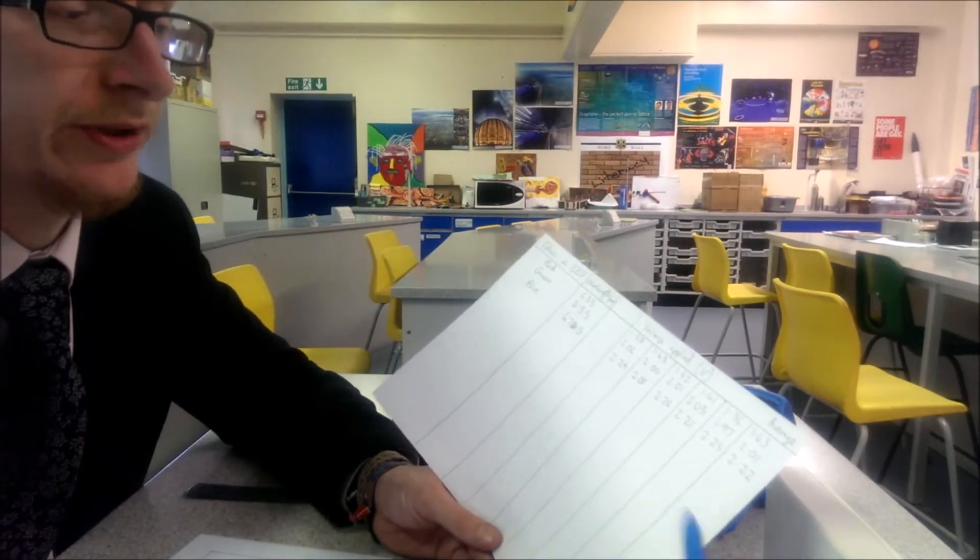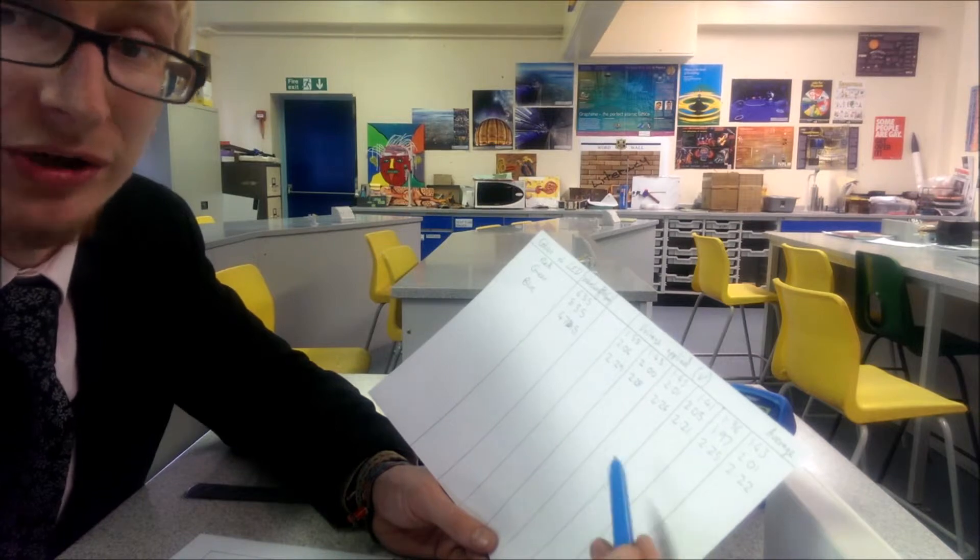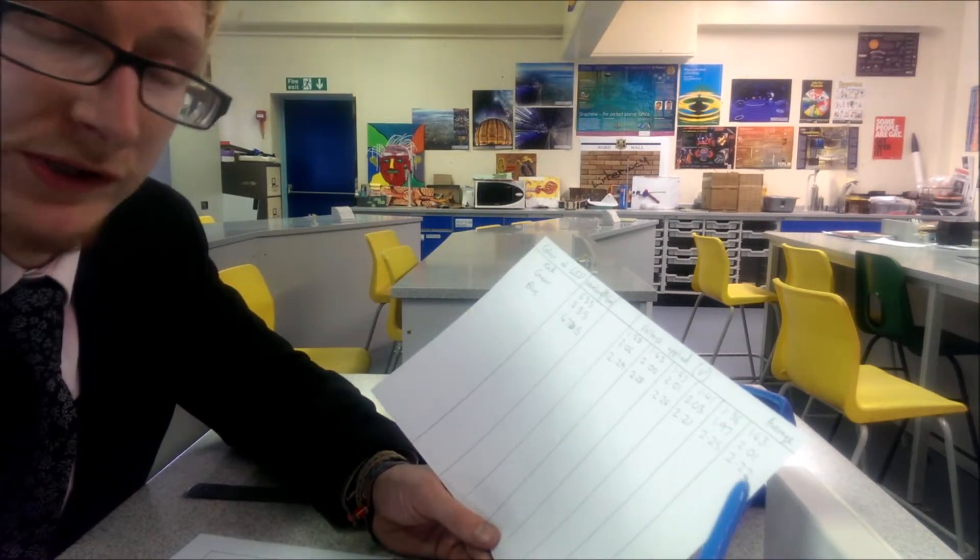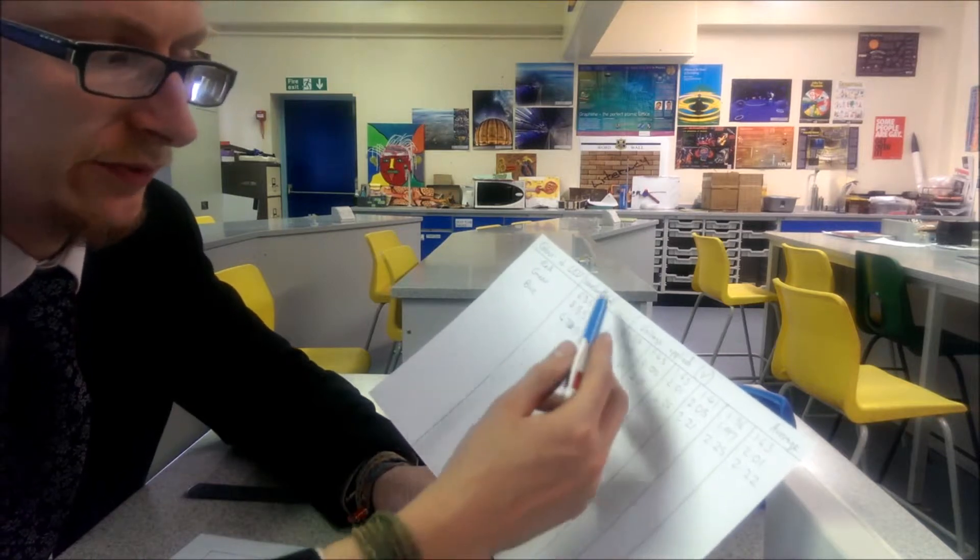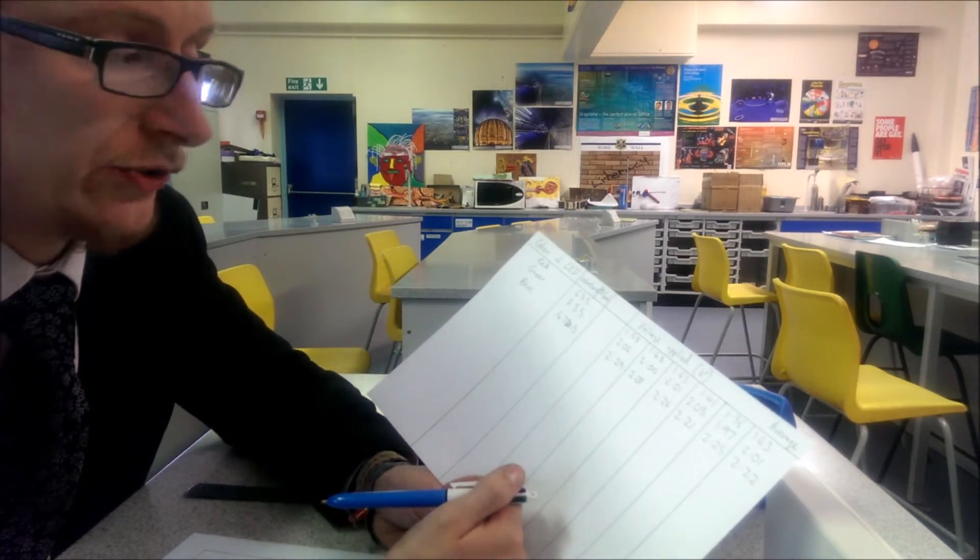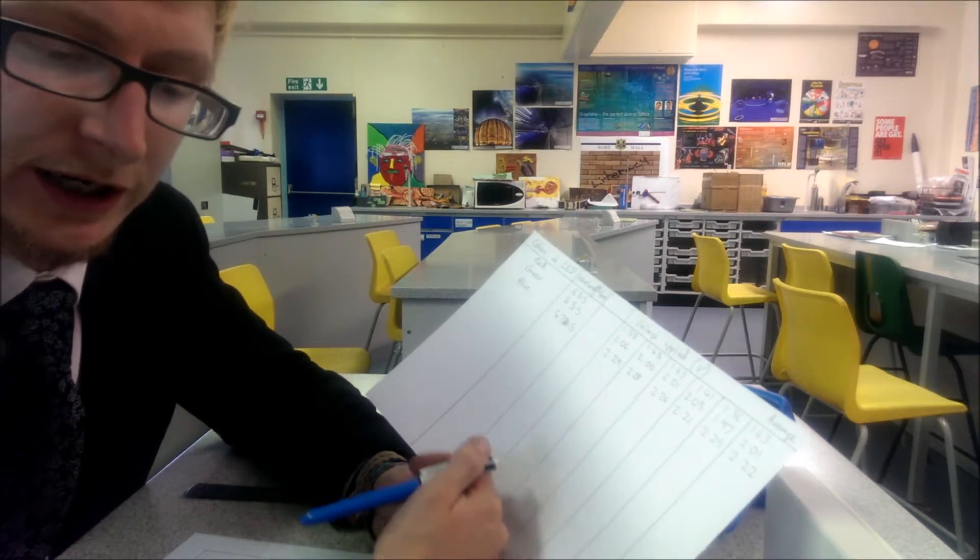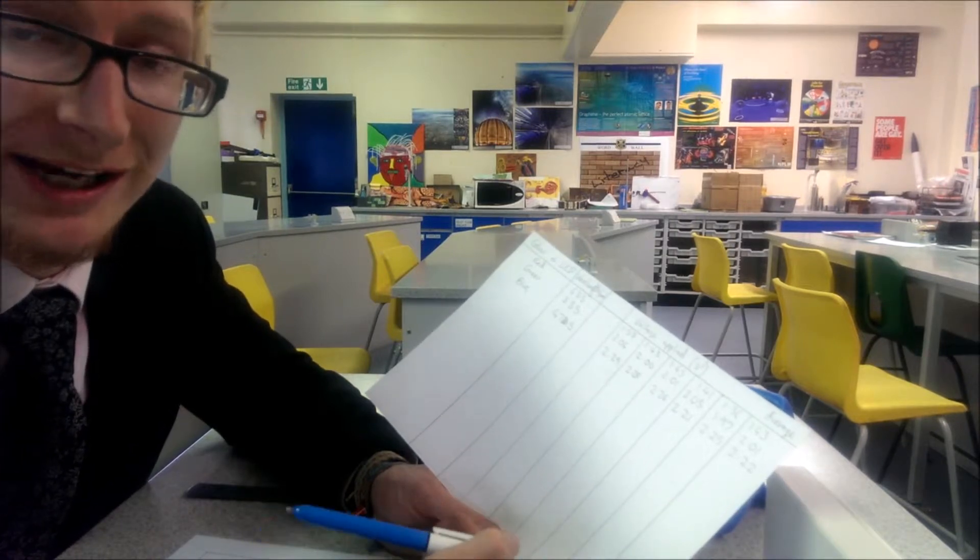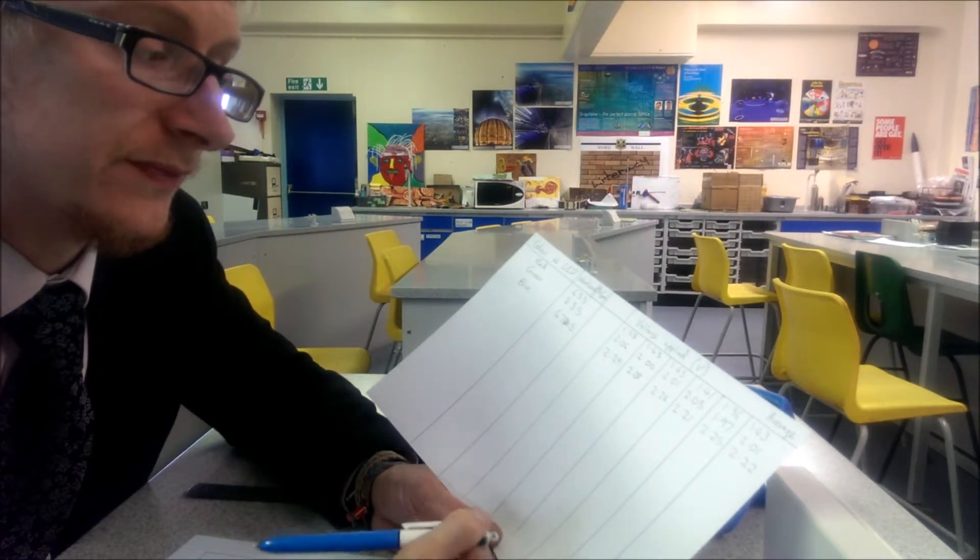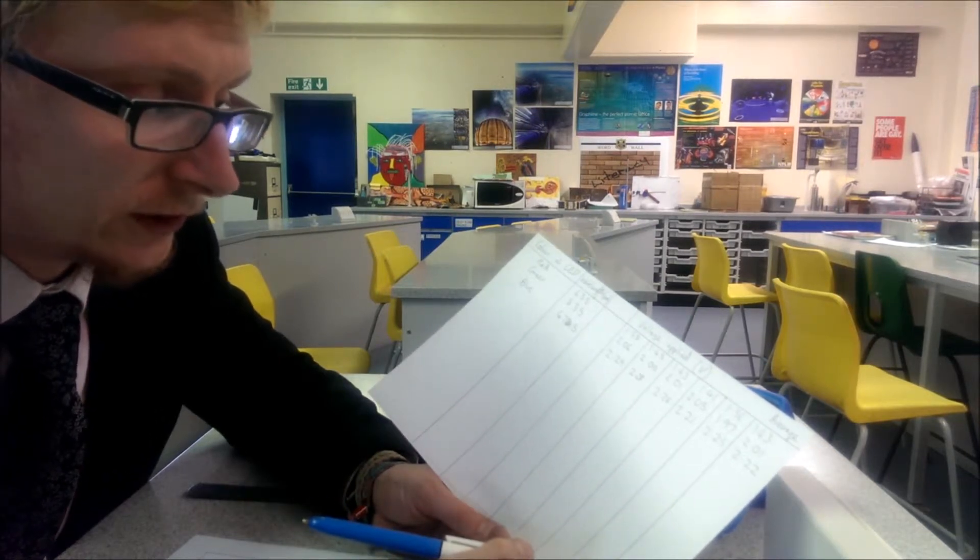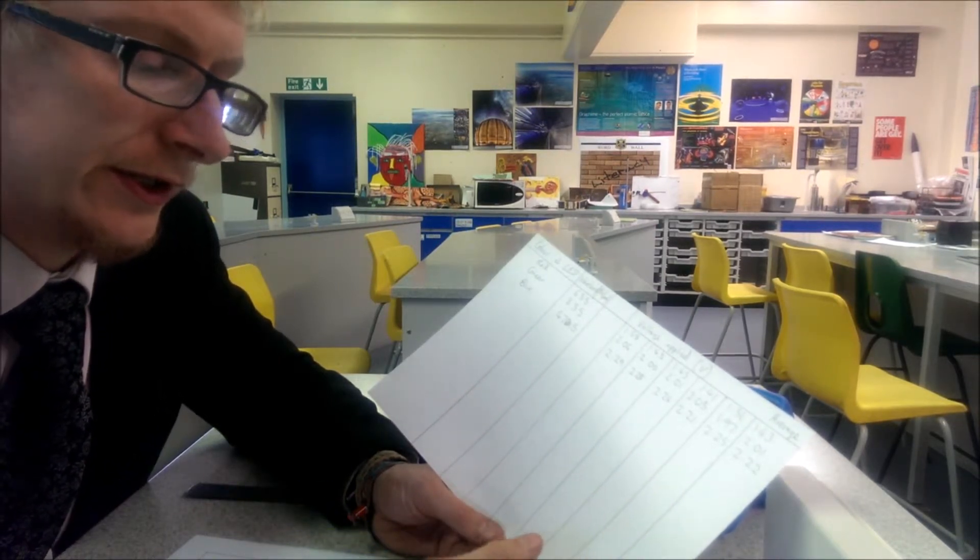Now we have a set of results to calculate the average voltage needed to turn on each LED. We're going to plot this on a graph of voltage against frequency. The reason for this is because the equation that relates frequency and energy is E equals HF. To find Planck's constant, we want to do E over F equals H.